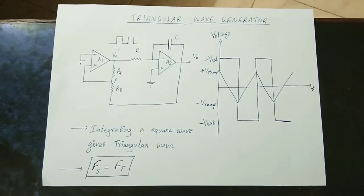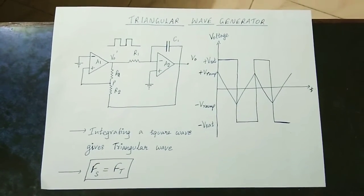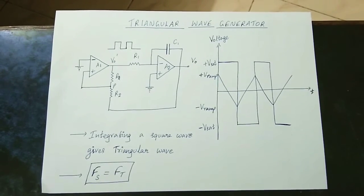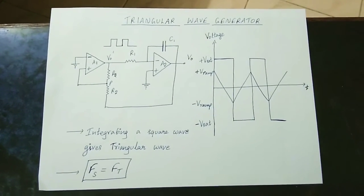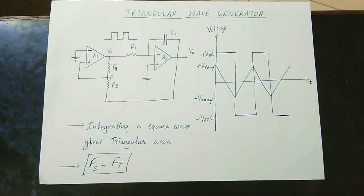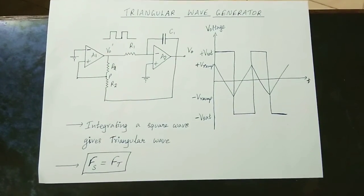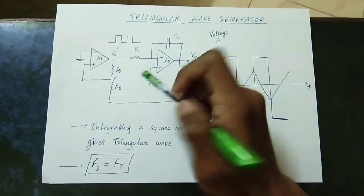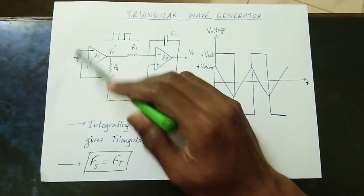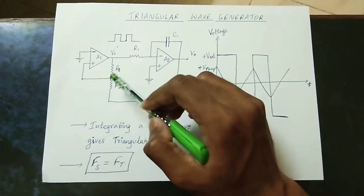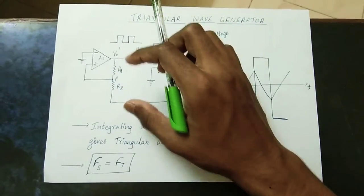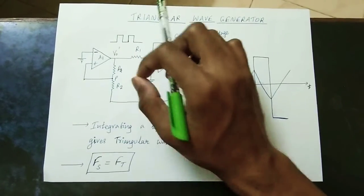One output is a triangular wave. The square wave is produced by an astable multivibrator. The astable multivibrator circuit is modified compared to the circuit in previous videos. In the inverting terminal and the non-inverting terminal, R2 and R3 form a potential divider — the resistance part provides the feedback.